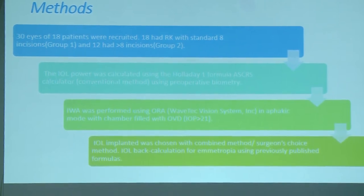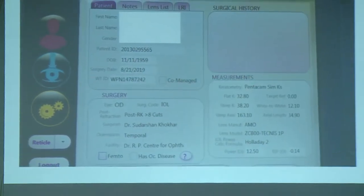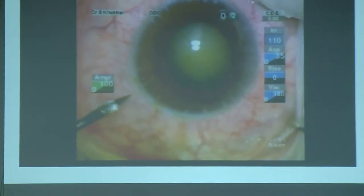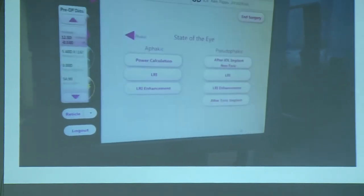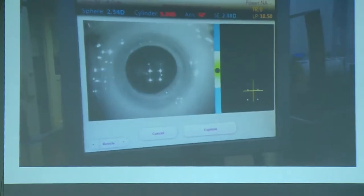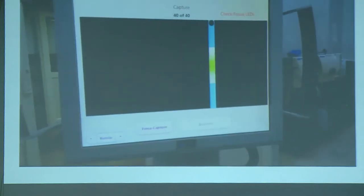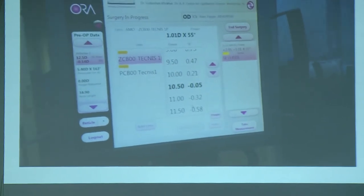IOL power was calculated using Holladay 1 with ASCRS calculator as the conventional method. Intraoperative wavefront aberrometry was performed using ORA in phakic mode with chamber filled with OVD and IOP more than 21, and IOL power was chosen by the surgeon's combined method. Patient data entry with selection of post-RK mode in 8-cuts mode was made after removal of nuclear and cortical matter, with anterior chamber formed with viscoelastic to raise IOP to adequate levels. Aberrometry is performed in phakic mode — the patient looks at a red target light — after which the IOL of chosen power is implanted.